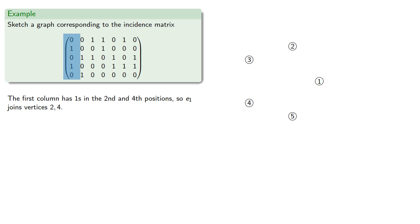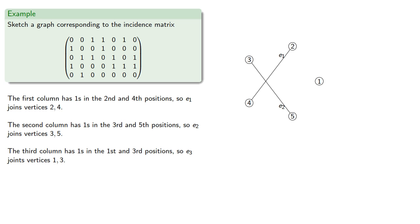The first column has 1s in the second and fourth positions, so edge 1 joins vertices 2 and 4. The second column has 1s in the third and fifth positions, so edge E2 joins vertices 3 and 5. The third column has 1s in the first and third positions, so E3 joins vertices 1 and 3.